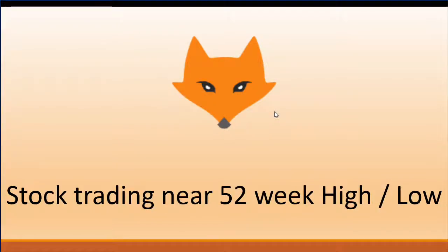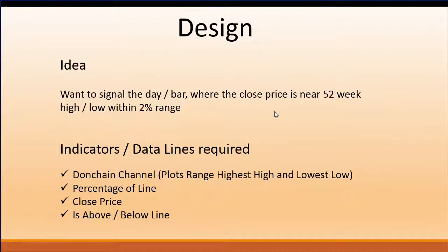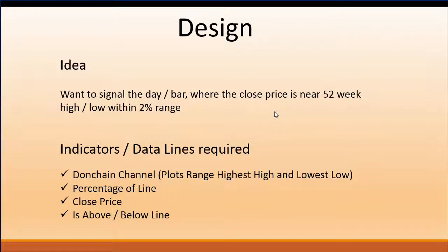Let's look at the construction of a signal where the stock is trading near its 52-week highest high or lowest low. I need to plot a signal on a day or bar where the close price is near the 52-week high or low and is trading within a 2% range. The indicator required for this is the Donchian Channel, which plots the range highest high and lowest low lines together.